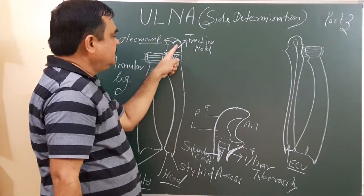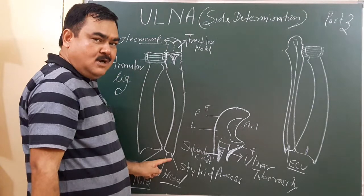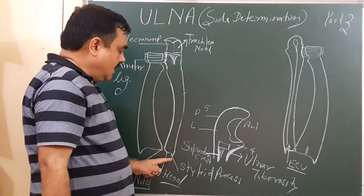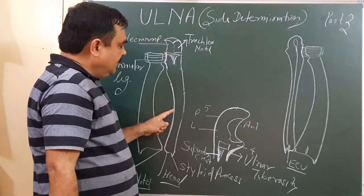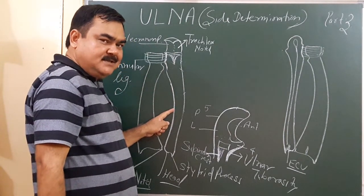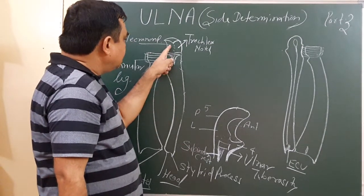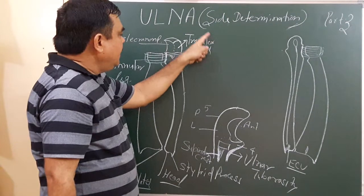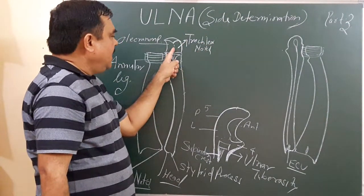The olecranon process is directed upward and the styloid process is directed downward, lying posterior-medially. This sharpest border lies on the lateral side, the interosseous border. Another important thing is the trochlear notch, which faces anteriorly.